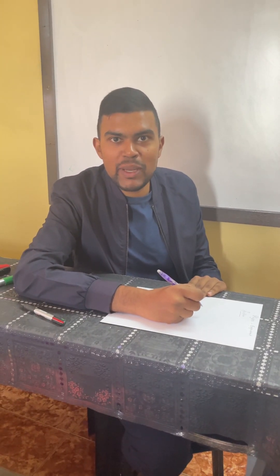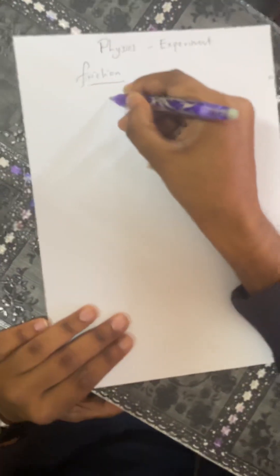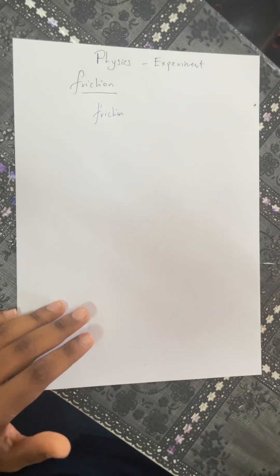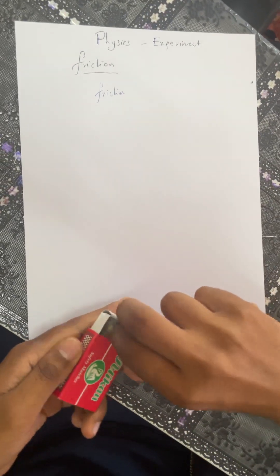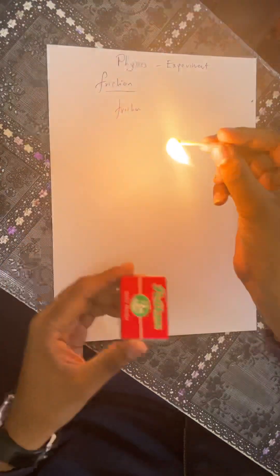Today we are going to do an experiment in physics based on friction. I'm going to take a pen and write 'friction' here as you can see, and then I'm going to use a match. You're going to see what is going to happen.